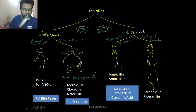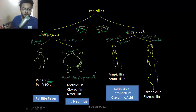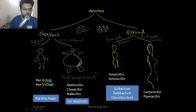Narrow spectrum penicillins cannot enter gram-negative bacteria because gram-negative bacteria have small porins, and the fat molecule cannot pass through. Among narrow spectrum, you have natural penicillins like penicillin G (injectable) and penicillin V. Penicillin G can be used in rat bite fever.